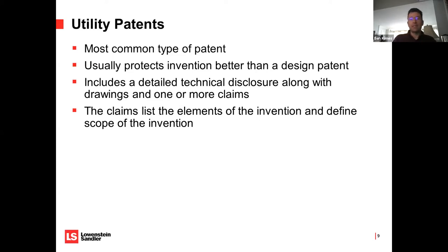A patent application generally has three main parts: a specification — the text describing what the invention is; figures — the illustrations showing it; and claims. The claims are the section that actually define the legal scope of your coverage. That's what courts look at when they decide if somebody's infringing your patent. They're also the most confusing part of a patent to read because they're written in a really bizarre way — basically one long run-on sentence.